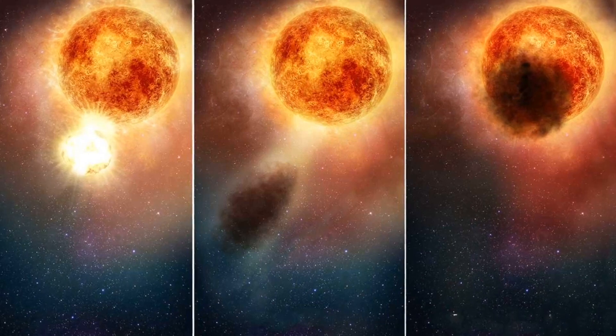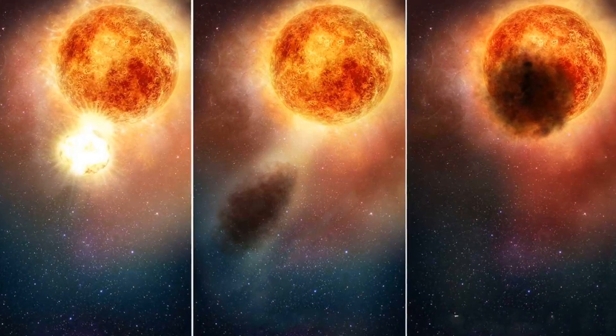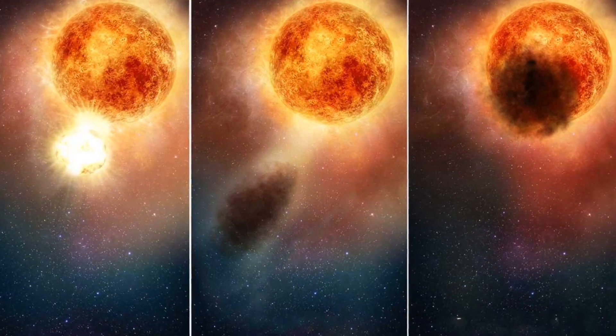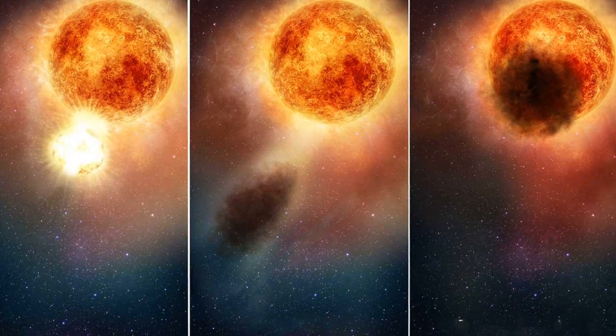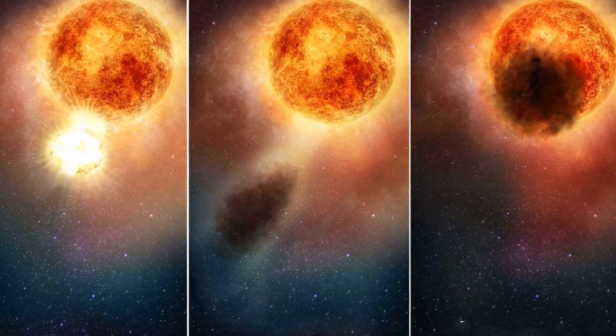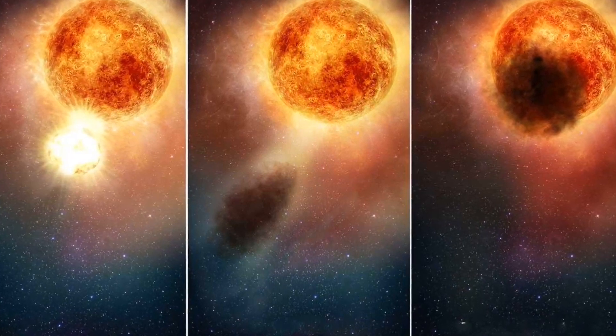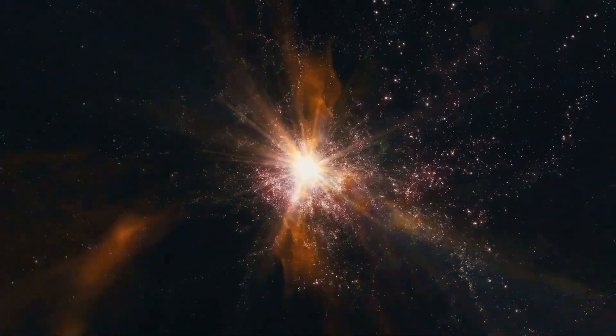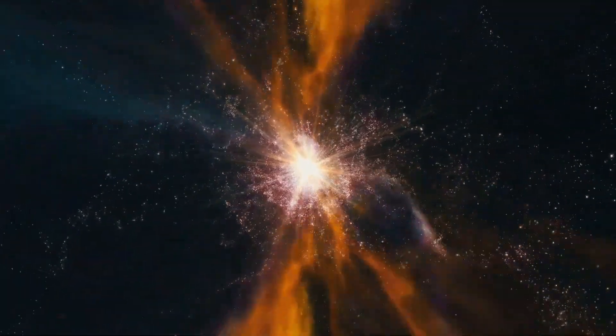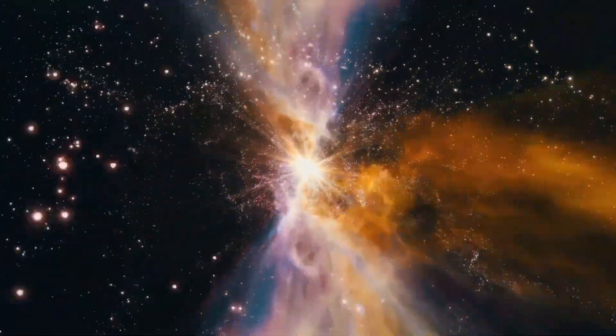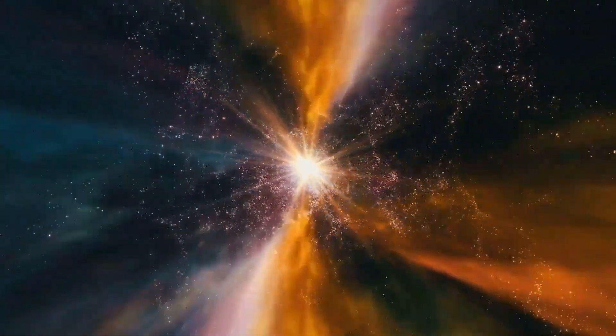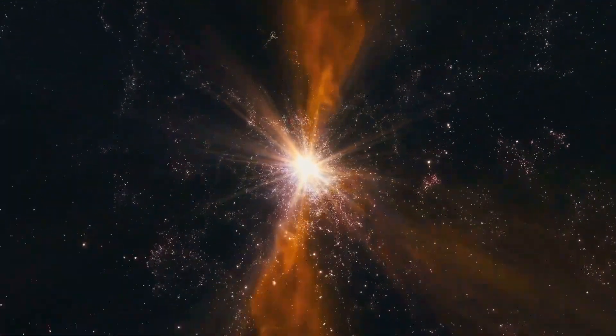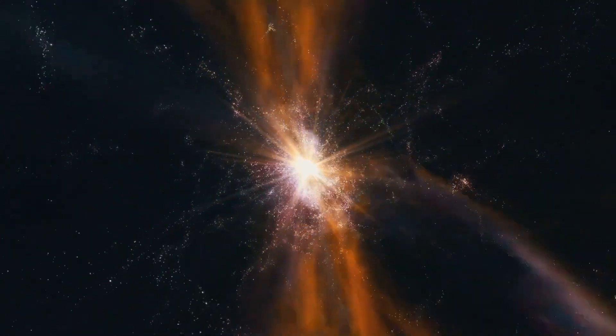But what would be the implications of a Betelgeuse supernova for Earth and our solar system? It is important to note that, despite Betelgeuse's relative proximity in cosmic terms, 650 light-years represent an astronomical distance. Such vast distances serve as natural barriers against the direct effects of a supernova. Our atmosphere, with its protective shield, would absorb most of the cosmic rays and radiation produced by the supernova, safeguarding life on Earth from direct harm.